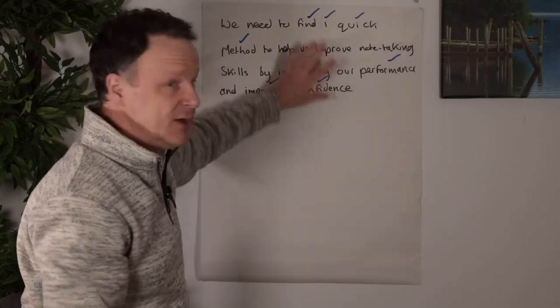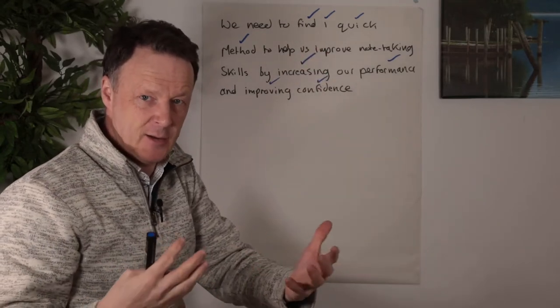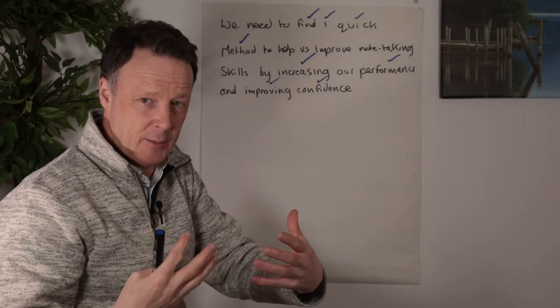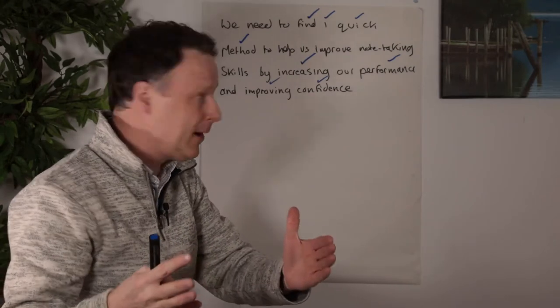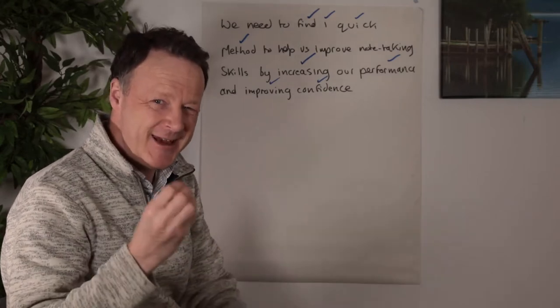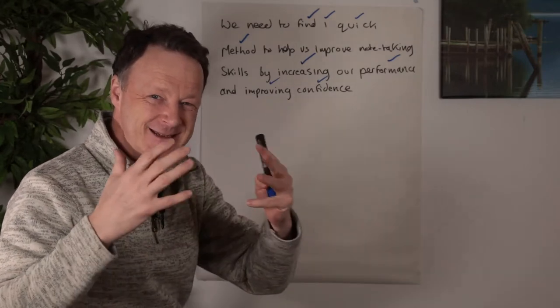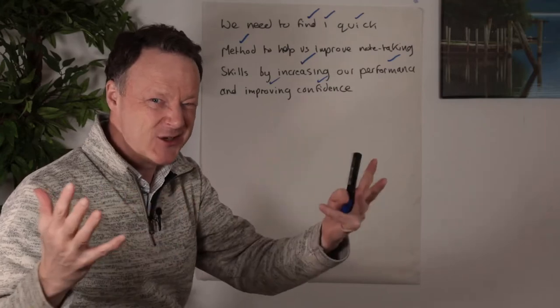Now already I've reduced the amount of information I would capture. In next generation note-taking, we call it harvesting. So the amount of information I harvest has already reduced probably about 60%. The next magical key is deep processing and this changes everything.